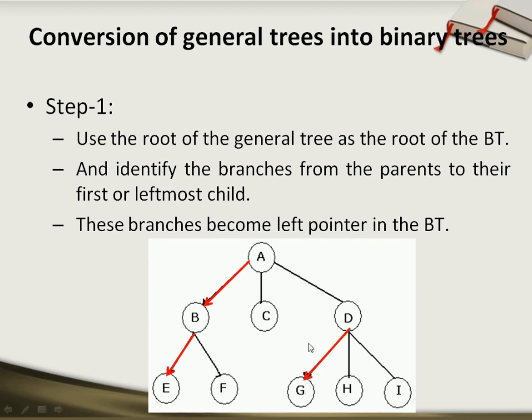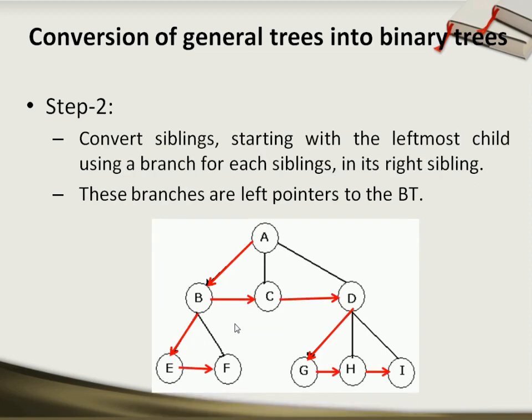Then in the next step, we will find out all the siblings for a particular node. For example, for node B we have siblings C and D; for node E we have sibling F; for node G, H and I are the siblings. We will identify such siblings and connect them using a separate pointer. In the future, this separate pointer becomes the right pointer. So we connect B to C, C to D, then E to F, G to H, and H to I. These are the red color marked pointers we have added.